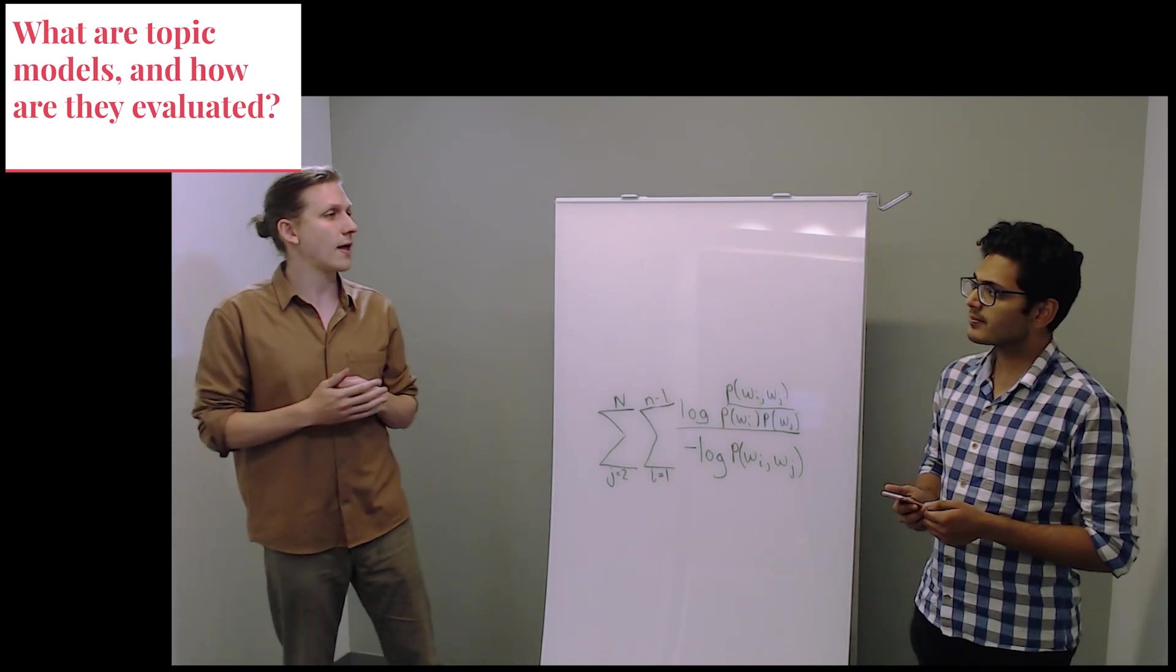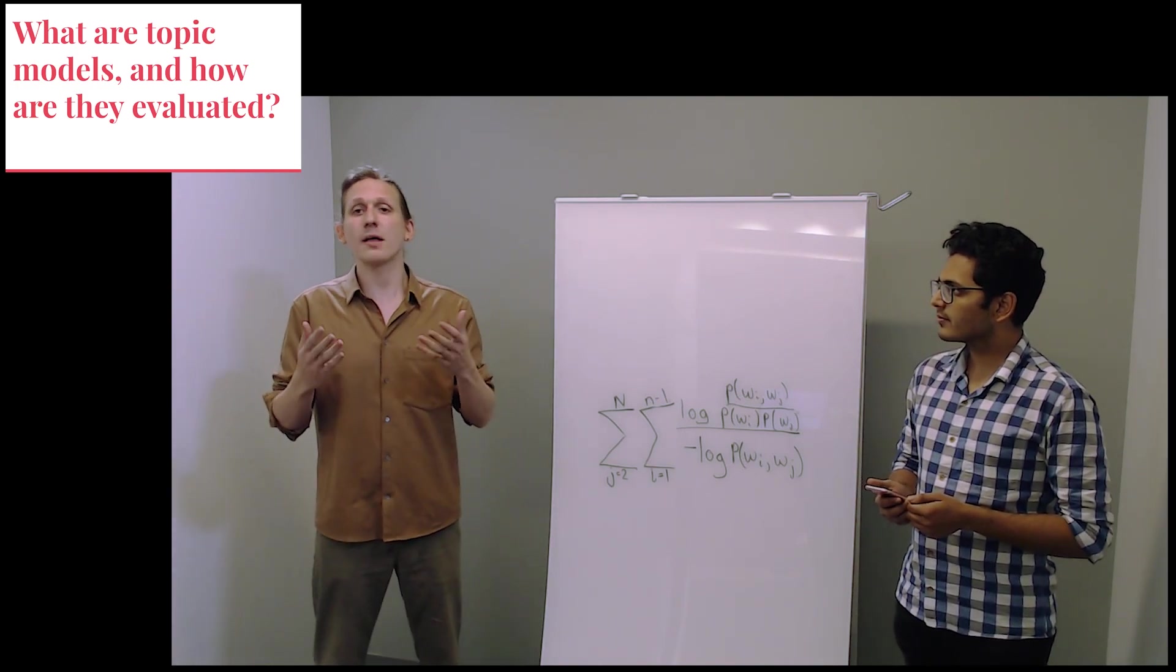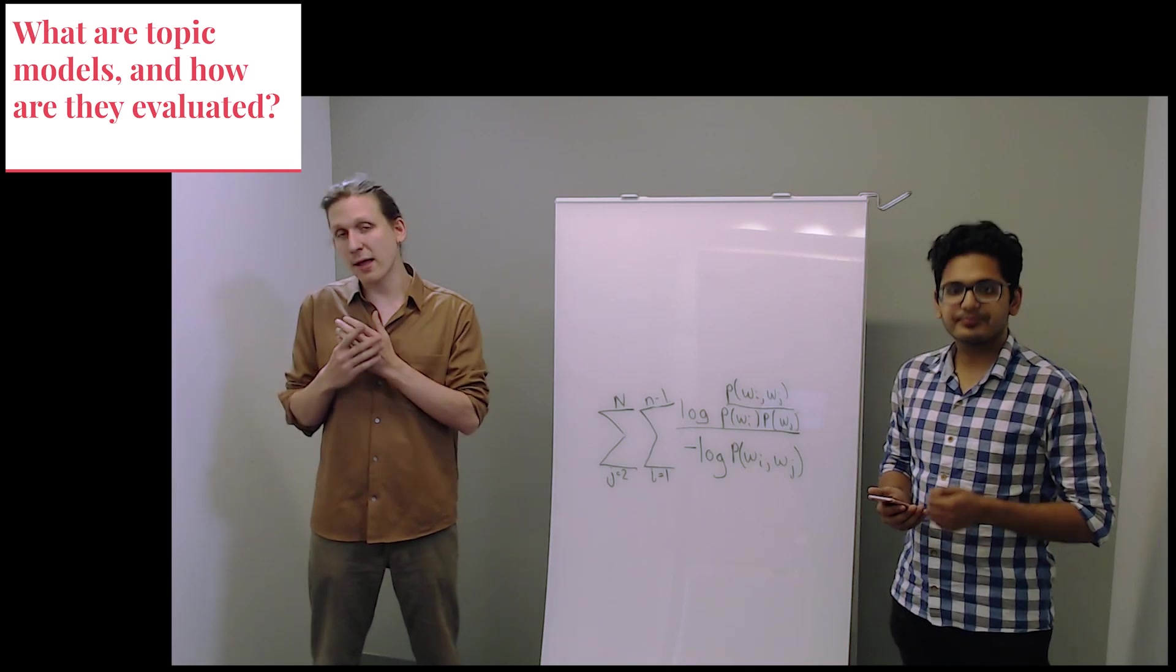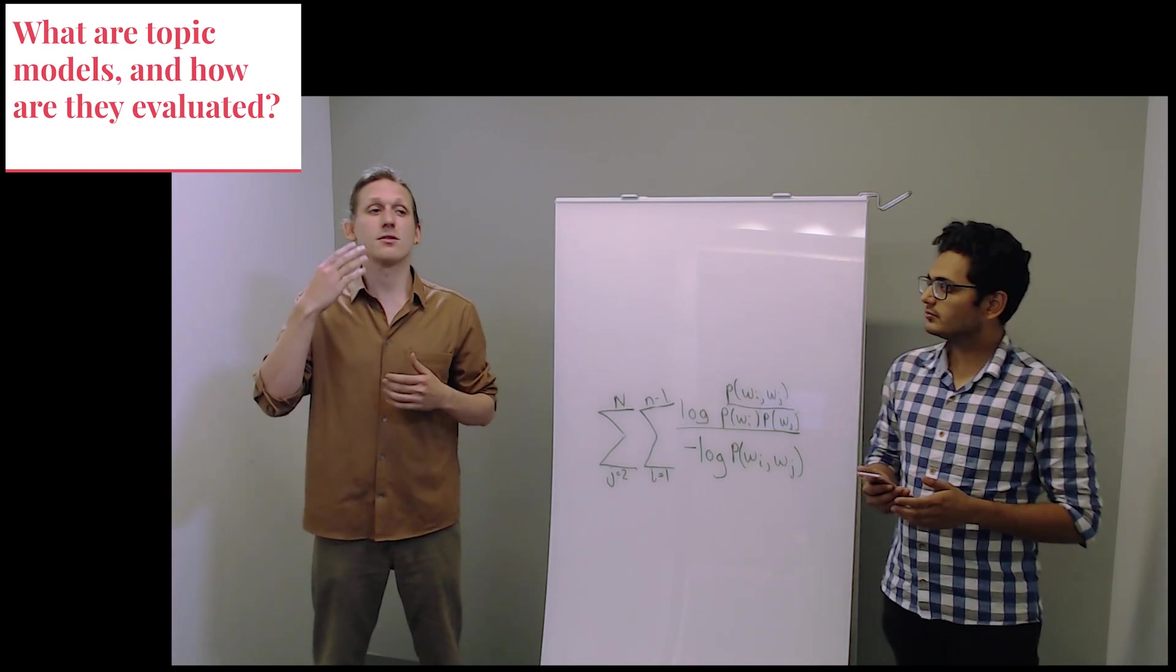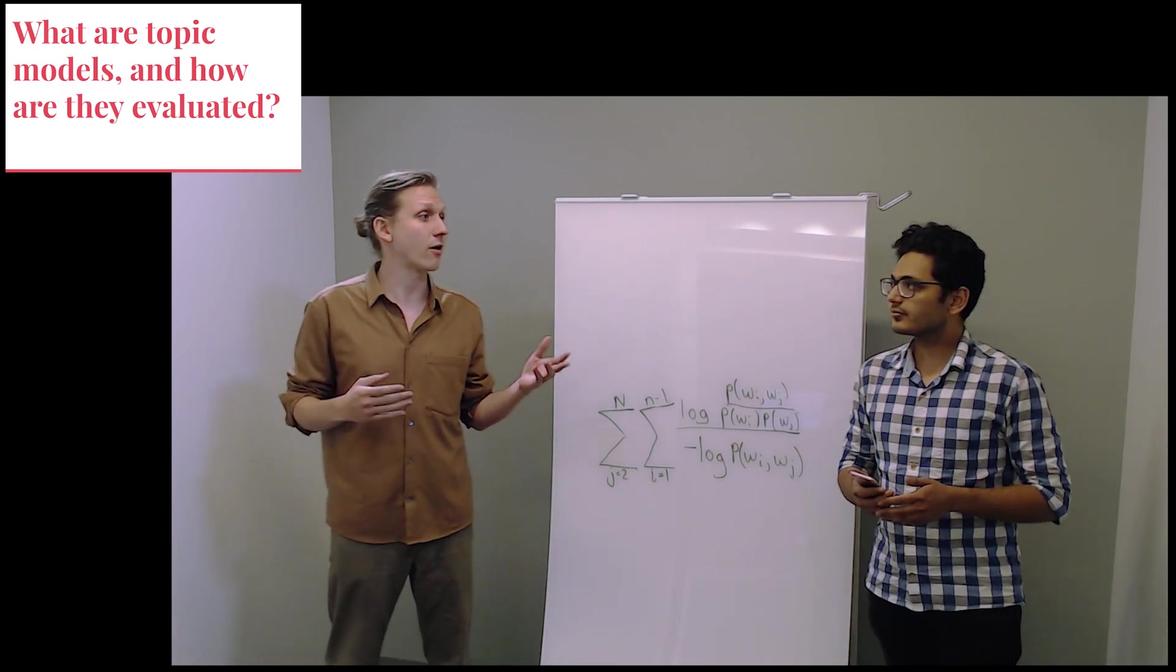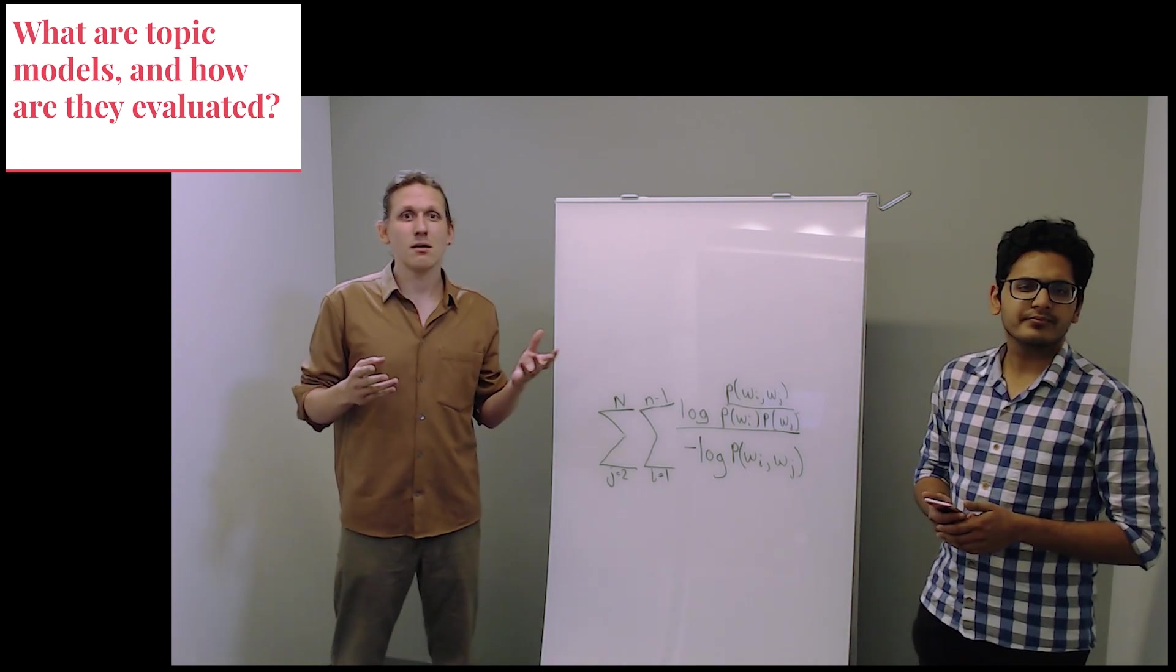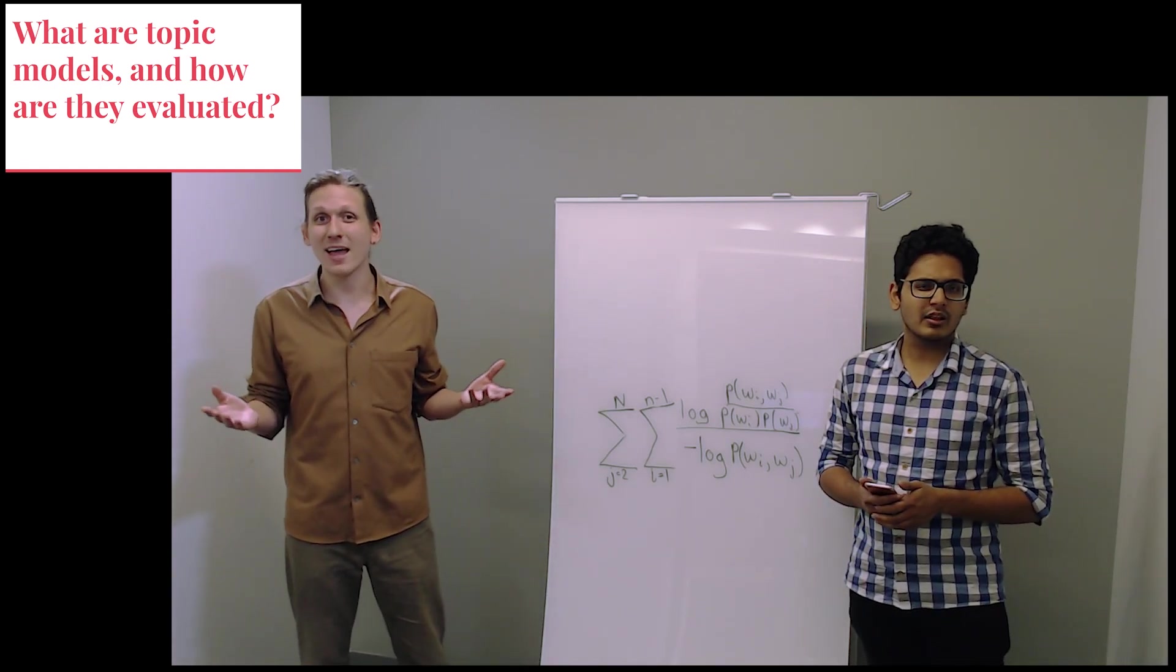So how are they evaluated? Well, at first, the field evaluated topic models with held-out perplexity, which is very much connected to the likelihood of the data. After all, they are generative models. But since we don't use topic models to do text prediction, that metric doesn't really make any sense.